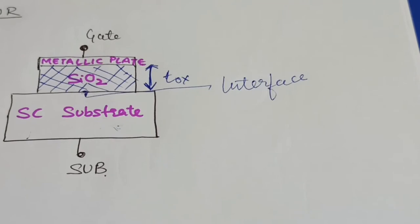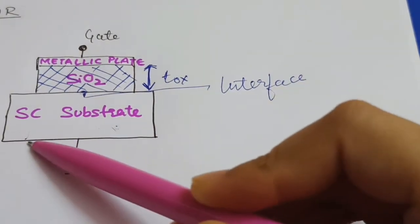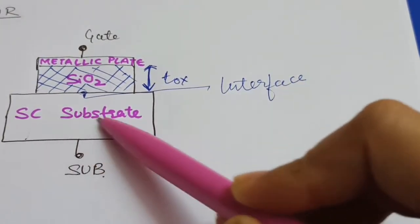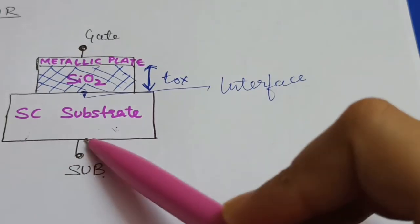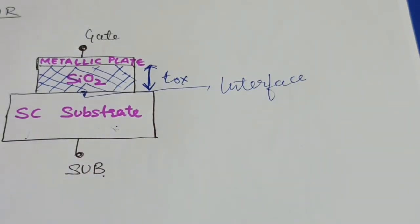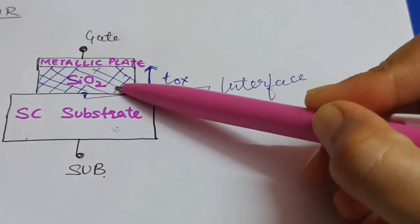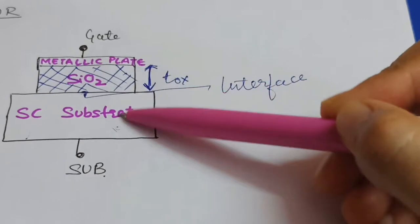The semiconductor region away from the interface is known as bulk. The semiconductor substrate can be either n-type or p-type. The metallic plate may be aluminum or any other suitable metal — nowadays it is polysilicon. The MOSFET structure works as a parallel plate capacitor because the oxide layer acts as the dielectric and the two conducting plates are on either side.